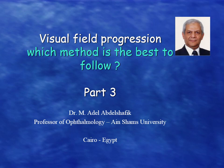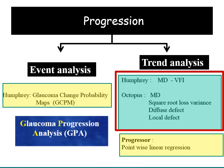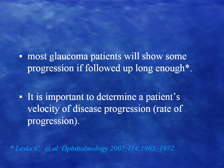In this part I'm going to discuss trend analysis. Trend analysis can be seen in the Humphrey perimeter using mean deviation and visual field index. You can also see it in the Octopus using mean deviation, square root loss variance, the difference, diffuse defect, and local defect. There is also another software that depends on trend analysis which I will discuss later.